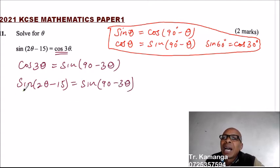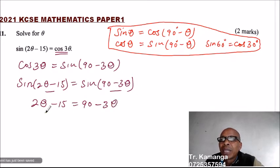Now, because we are working with the same, then we can say 2θ minus 15 equals 90 minus 3θ. We put theta to the same side, so we have 5θ. Take 3θ to this side, becomes positive.